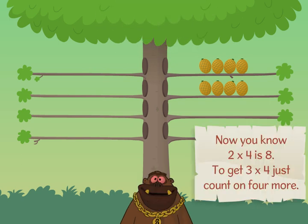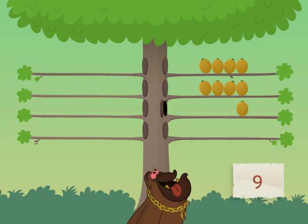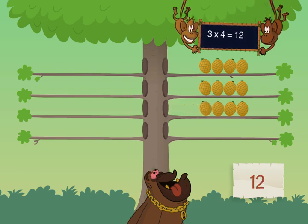Now you know two times four is eight. To get three times four, just count on four more. Nine, ten, eleven, twelve. Three times four is twelve.